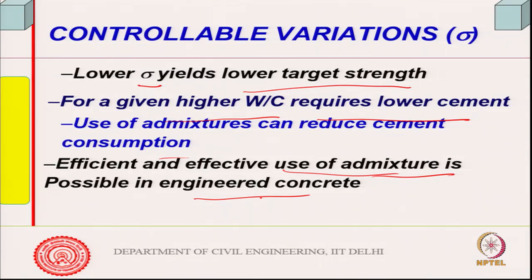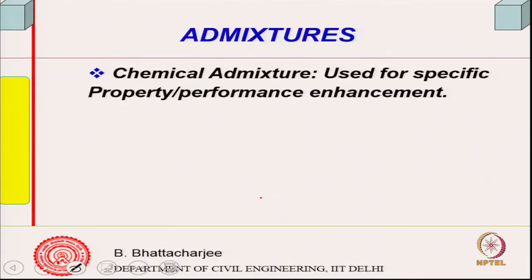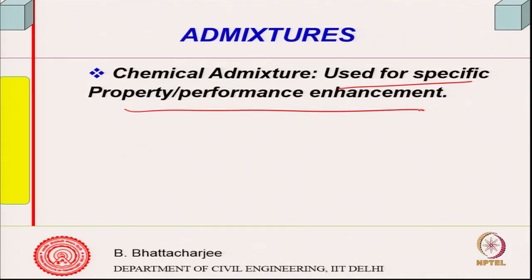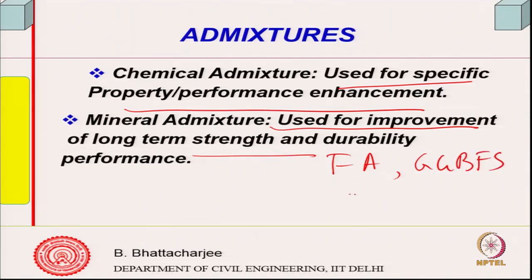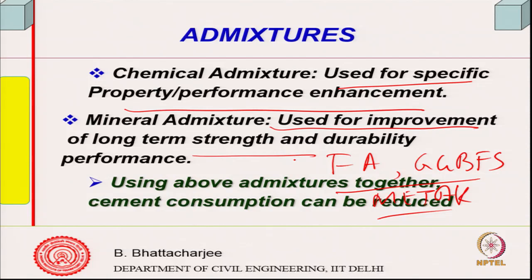If concrete is manually mixed you cannot control the admixture quantity accurately, so engineered concrete is required. Admixtures are used for specific performance improvements. Mineral admixtures such as fly ash, ground granulated blast furnace slag (GGBS), and metakaolin can be added either as admixtures or as part of the cement component. Many other mineral admixtures can be added to reduce cement consumption.